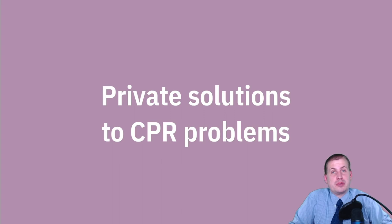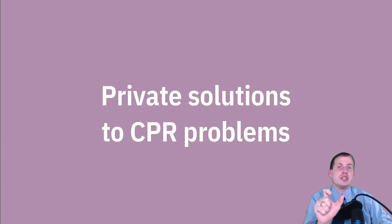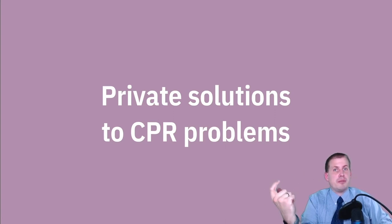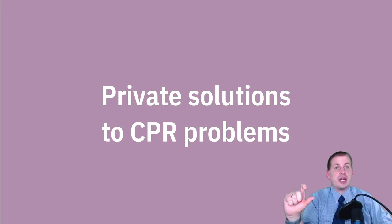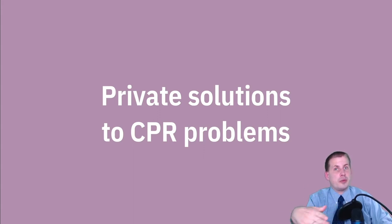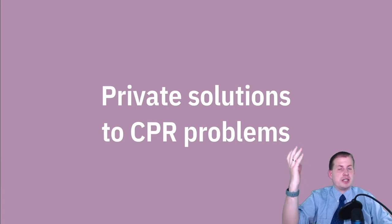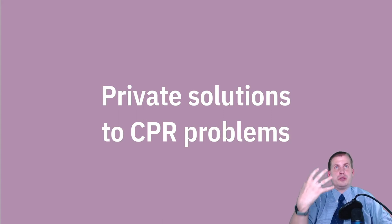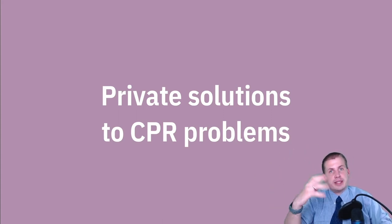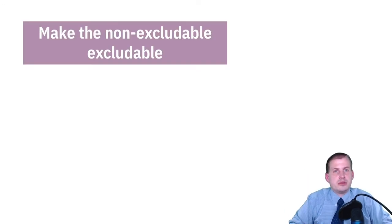One fix for common pool resource problems is to rely on the private sector. This is fairly intuitive when you think about excludability and rivalry. The whole reason we have common pool resource problems is that they are non-excludable but rival. A private good is excludable and rival, so we're already 50% of the way there. If we can change a common pool resource from non-excludable to excludable, it becomes a private good that can be bought and sold in a market, subject to the forces of capitalism.